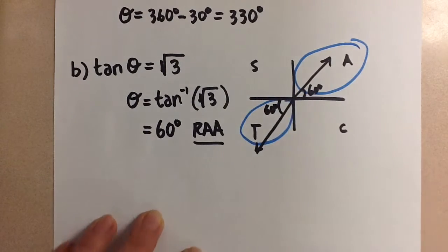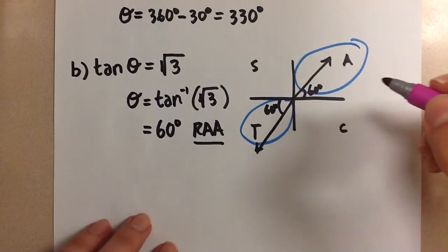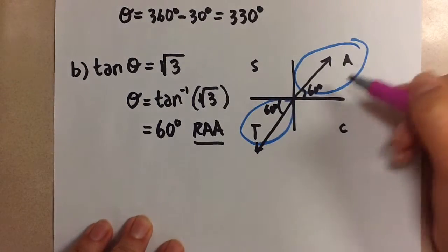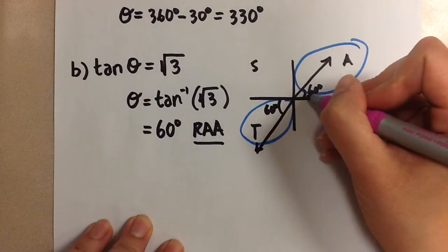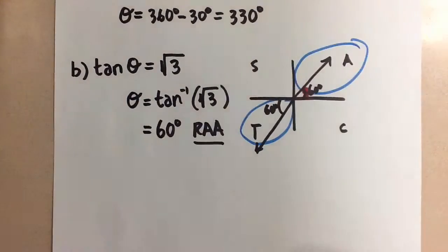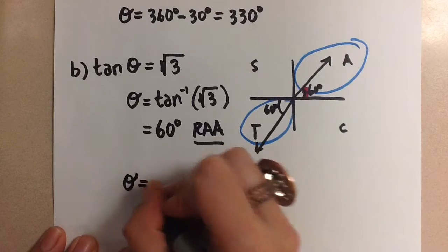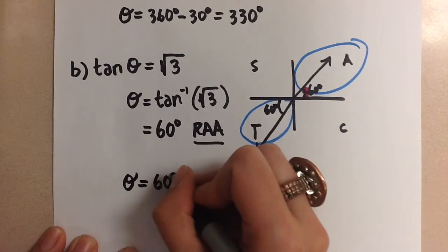And now we're interested in finding out the principal angles that match those two related acute angles. So in our first quadrant that one's very easy. The first quadrant related acute angle and principal angle are always the same. So the first solution for theta we know is going to be 60 degrees.